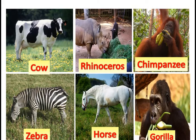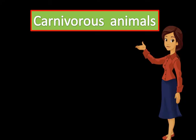Cow, rhinoceros, chimpanzees, zebra, horse, gorilla are examples of a few herbivorous animals. Now let's do the second category, carnivorous animals.